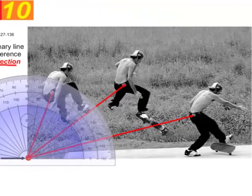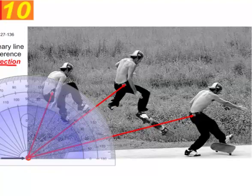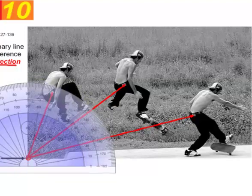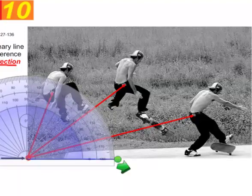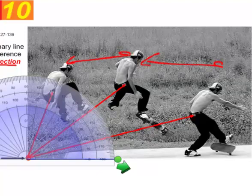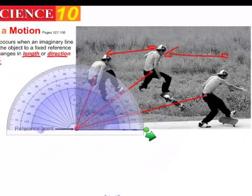If we have a look at this skateboarder here, we can certainly see using this protractor that the angle of the skateboarder is definitely changing, but we can also tell that the distance is changing as well. He's certainly moving away from the fixed reference point down on the corner here.